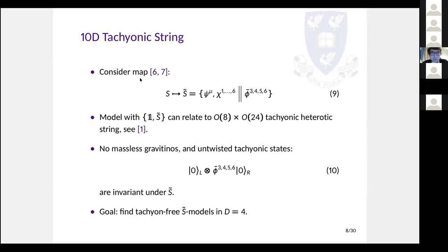Now, where does the tachyonic string come in? One way to generate the tachyonic heterotic string in this language is to implement a map which ensures we take S out of the basis and instead have S-tilde, which is just S with an augmentation of four right-moving fermions — a convenient choice is four of the hidden complex fermions. If we took a simple model with S-tilde in the basis, we could relate this to the untwisted gauge group O8 cross O24, which is the tachyonic heterotic string already found by Dixon and Harvey in the 80s.